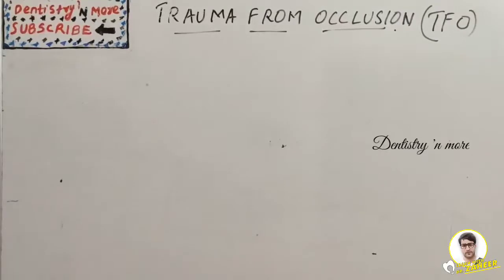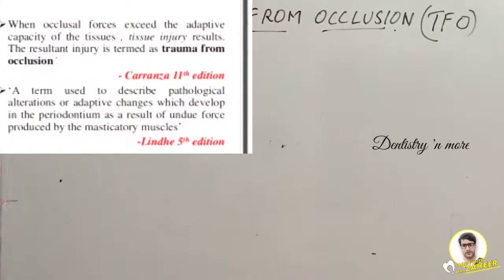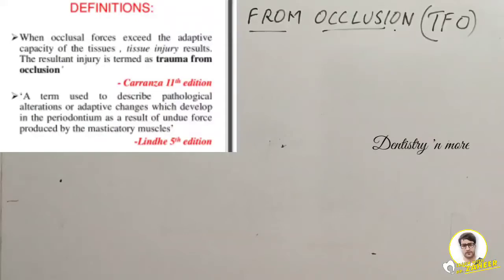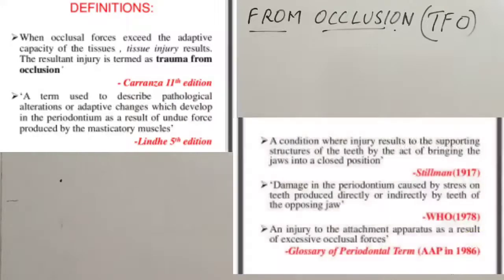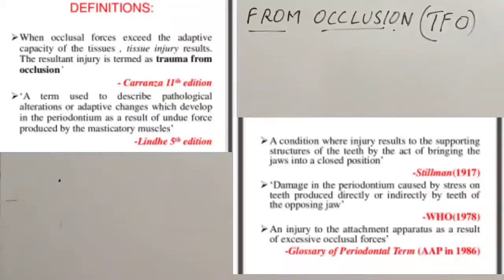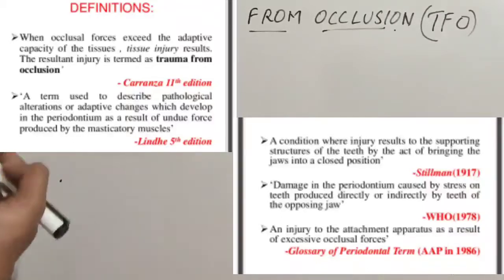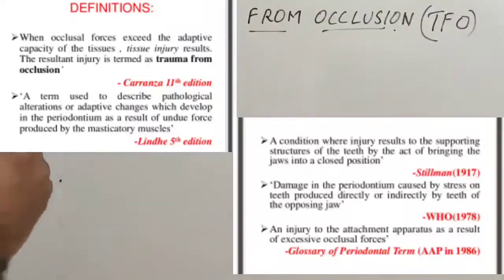The definition by Carranza 11th edition states: when occlusal forces exceed the adaptive capacity of the tissues, tissue injury results, and the resultant injury is termed trauma from occlusion. Various definitions are given by textbooks including the AAP Glossary of Periodontal Terms (1986, 5th edition), but the simplest definition is: occlusal forces exceeding the adaptive capacity of the tissue, which causes injury.